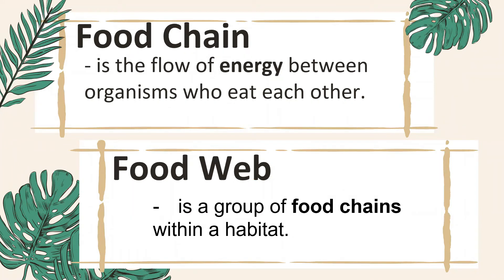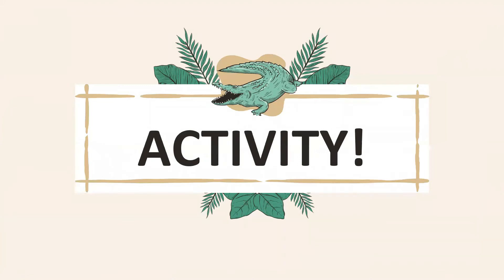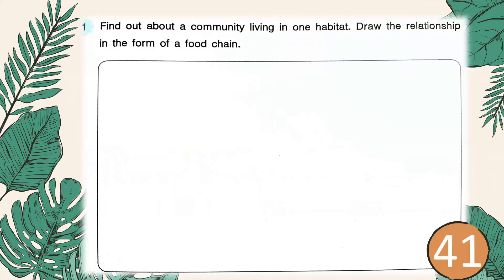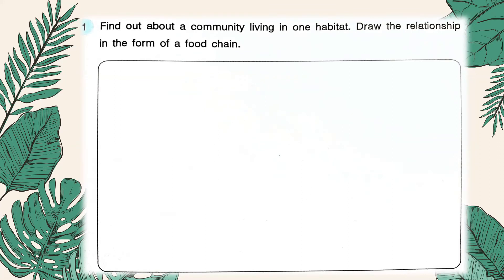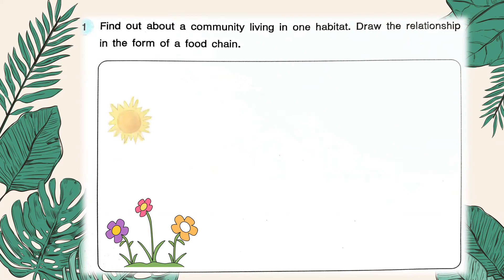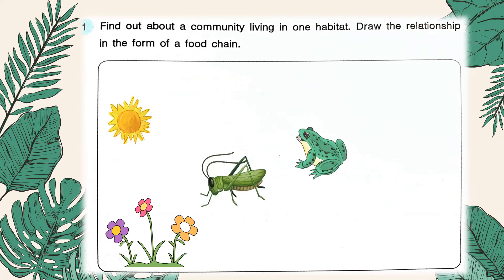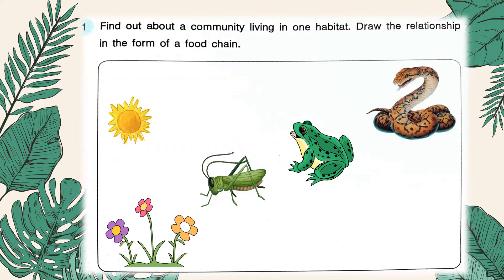That is the end of our discussion. For your activity, open your science book to page 41. The direction says: find out about a community living in one habitat and draw the relationship in the form of a food chain. For example, you can draw a plant as a producer which gets its energy from the sun, then the plant is eaten by a grasshopper, the grasshopper is eaten by a frog, and the frog is eaten by a snake. Draw an arrow to show the directions.